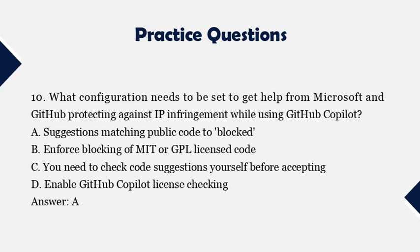Question 10: What configuration needs to be set to get help from Microsoft and GitHub protecting against IP infringement while using GitHub Copilot? A. Suggestions matching public code to blocked. B. Enforce blocking of MIT or GPL licensed code. C. You need to check code suggestions yourself before accepting. D. Enable GitHub Copilot license checking. Answer: A.